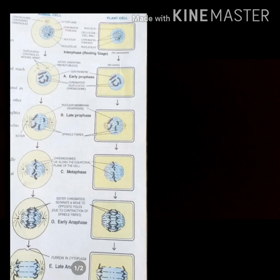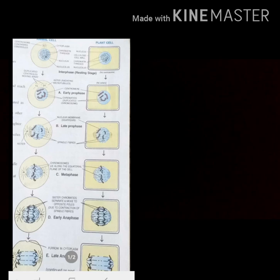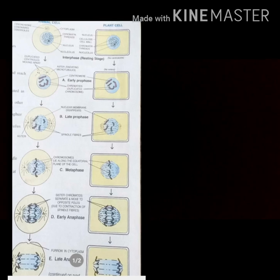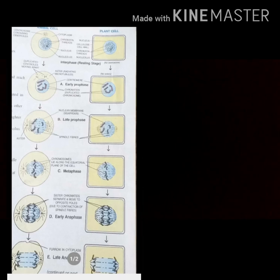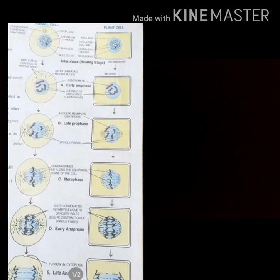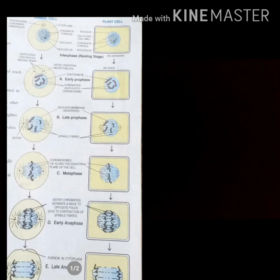Spindle fibers appear between the centrioles and the nuclear membrane. The nuclear membrane and nucleolus begin to disappear during late prophase. Moving into metaphase, the nuclear membrane and nucleolus disappear fully — there is no longer any appearance of the nuclear membrane. The chromosomes become attached to the spindle by their centromeres, which are the rounded structures through which the chromosome arms are held together.